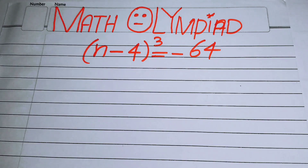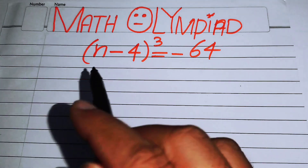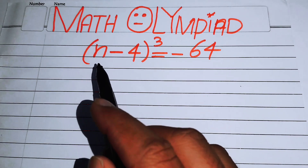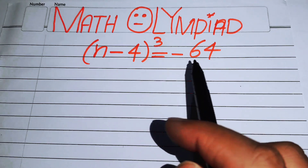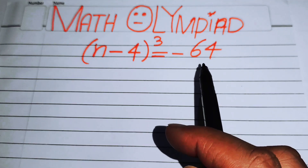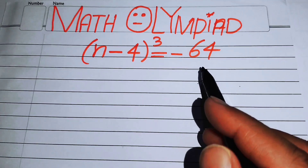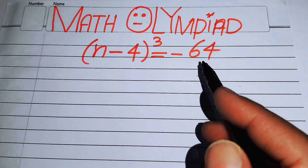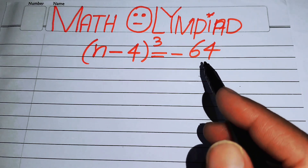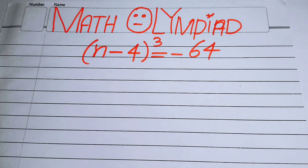Hello everyone, welcome back to the Map of Mathematics. In this video we are going to solve this algebra problem: (n - 4)³ = -64, and we will solve this problem for the values of n, finding all the roots.